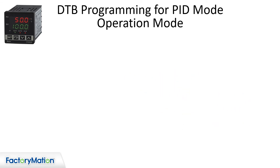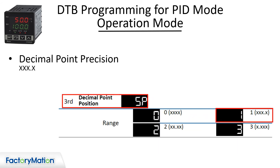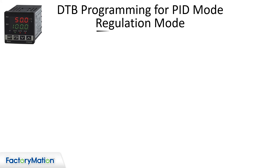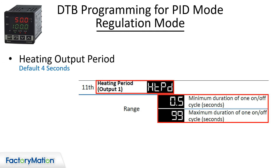Go to the operation mode. Set the decimal point precision to 1. Set the run stop mode to run. Go to the regulation mode. The heating period is set to 4 seconds by default — this is the length of time for the on-off cycle to the solid state relay.